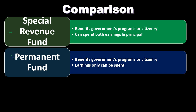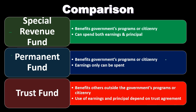In the permanent fund, there is a permanent principal component that cannot be spent; only the earnings are spent, and those earnings may be restricted to a designated purpose — but they still benefit the governmental unit or the citizenry it serves. In contrast, the trust fund, which is the fiduciary fund, benefits others outside the government's programs and citizenry. That is the key differentiating factor when deciding whether to place something in a fiduciary fund versus a governmental fund such as special revenue or permanent. Use of earnings and principal depends on the trust agreement.